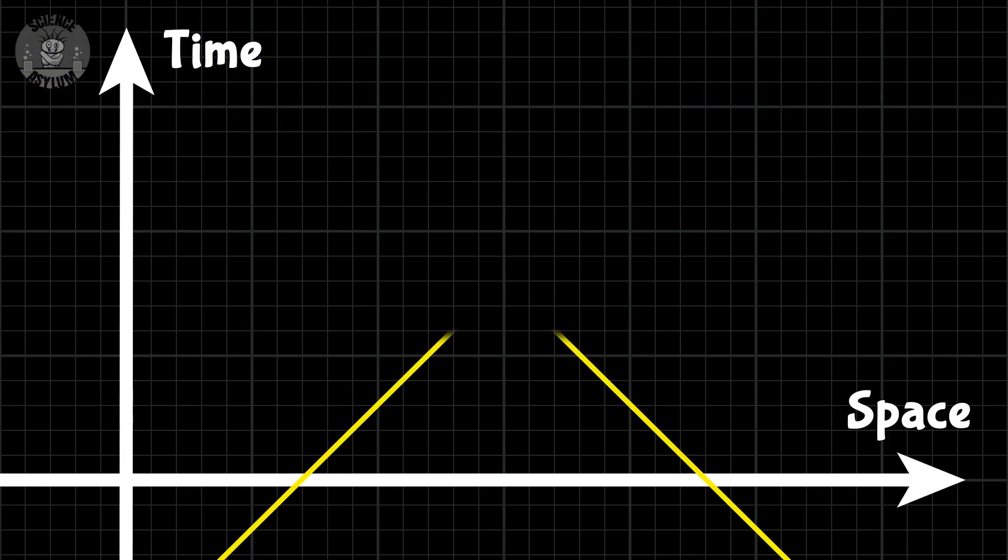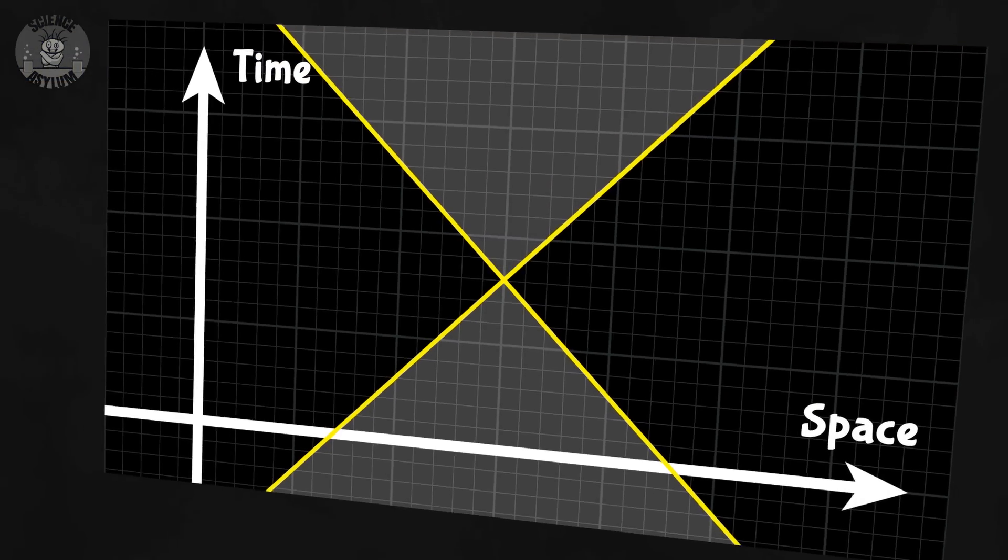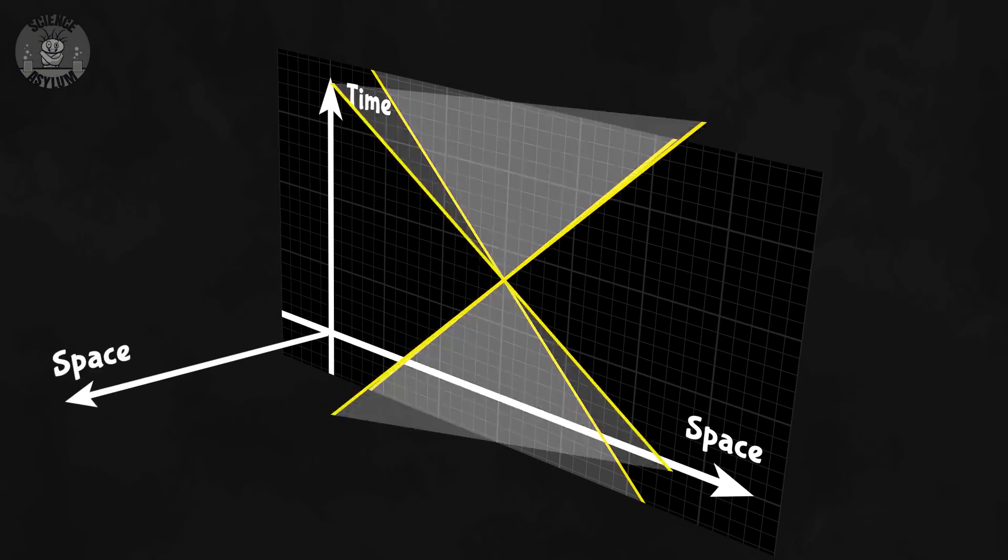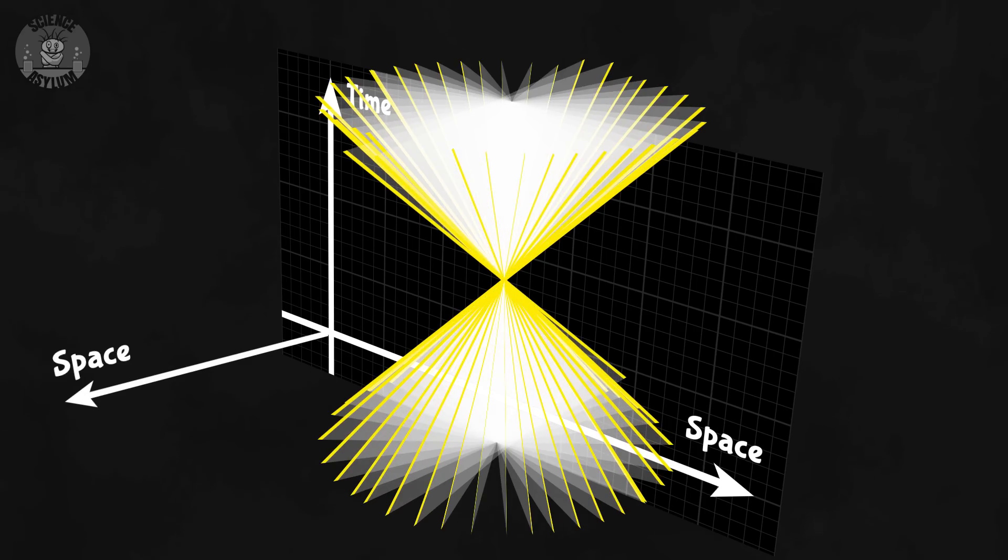Cones? How are those cones? Oh right, right, right. Let me explain. Only having a single space axis makes these look like triangles, but if you include a second space axis, you can see they're really cones. You just have to consider light traveling in any direction.